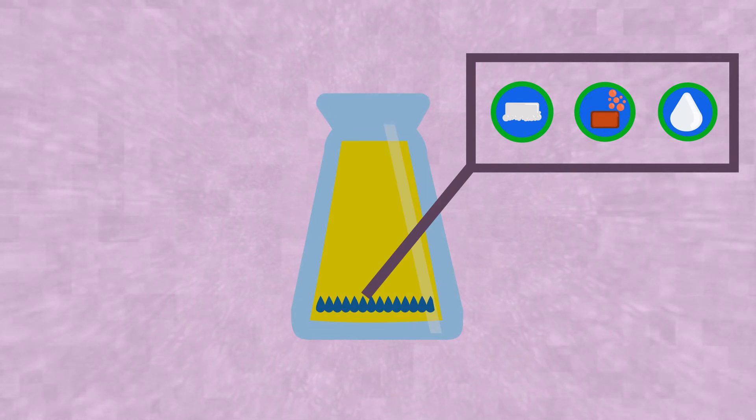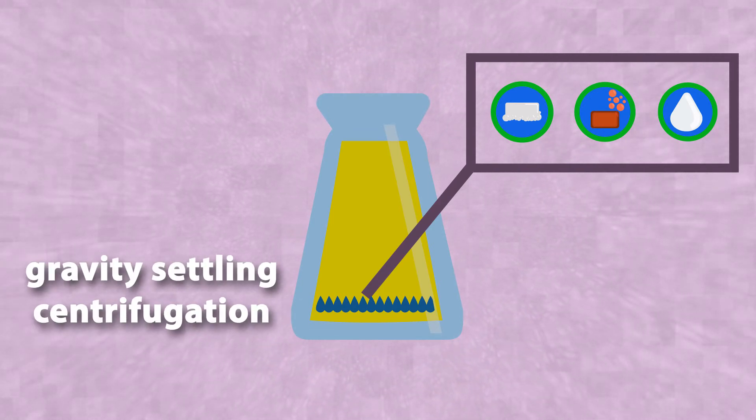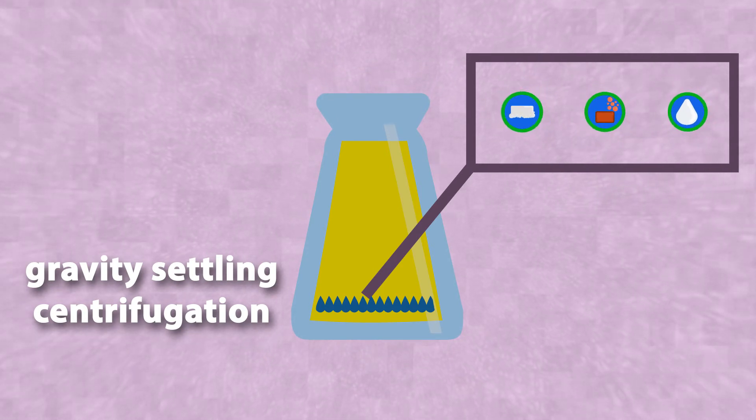When the water phase is removed, either by gravity settling or centrifugation, the impurities are removed with water and the concentrations of the contaminants in biodiesel will be reduced.